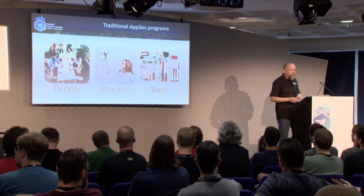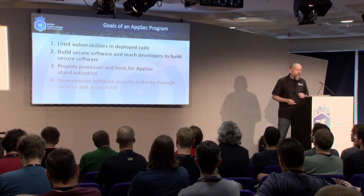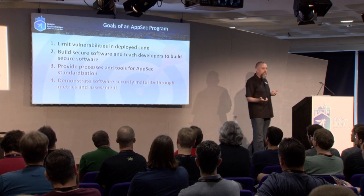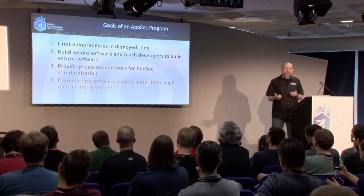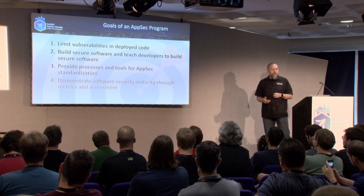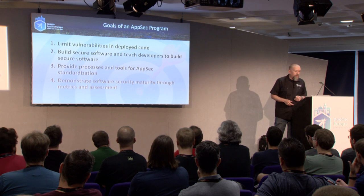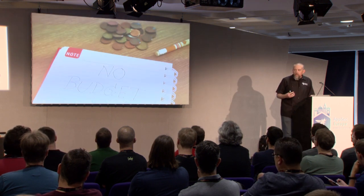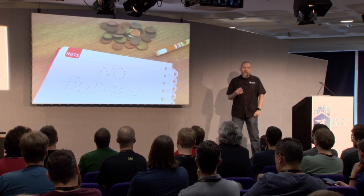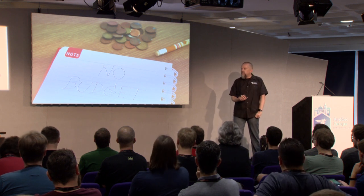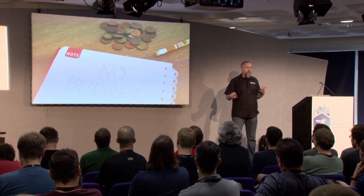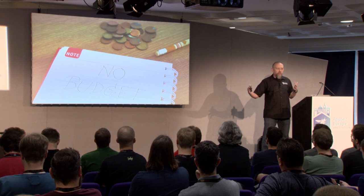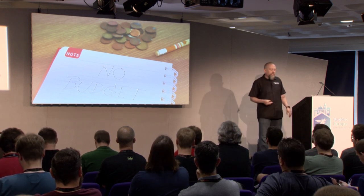Regardless of how much money you have to spend, you have a common set of goals for an application security program. First, it starts with limiting vulnerabilities in deployed code—that's really what we all want to do. We want to build secure software and teach developers how to code securely. I created this talk after thinking this question must have been answered before. I looked and it wasn't there, so I said I'm going to look at everything in the OWASP universe and figure out how I can filter it into sections to actually make something that could become a program.